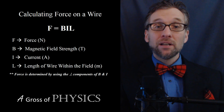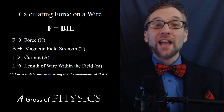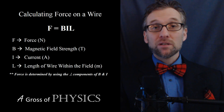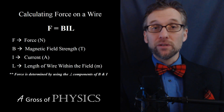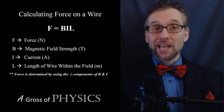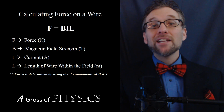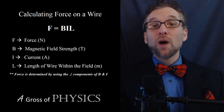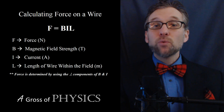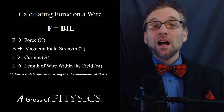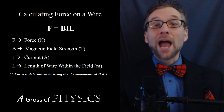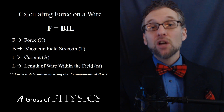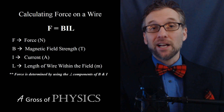The force on a wire can be determined by the equation F equals BIL. F is the force, measured in newtons. B is the magnetic field strength, in teslas. I is the current flowing through the wire, and L is the length of the wire that's in the magnetic field. If we take a wire and wrap it around something, we're placing more of the length within the field, so we can have a bigger force acting on it.